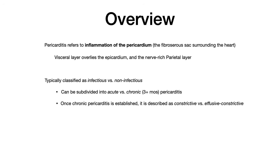That terminology can be further subdivided into acute versus chronic pericarditis in terms of timeline. Most people, when they say chronic pericarditis, are talking about three or more months. Once chronic pericarditis is established, it is subdivided into either constrictive pericarditis or effusive constrictive pericarditis, where the latter implies the presence of an effusion. On your exam, you should be aware that there is a spectrum of a timeline on which pericarditis can occur, and depending on where you are in that timeline, you get a slightly different presentation.